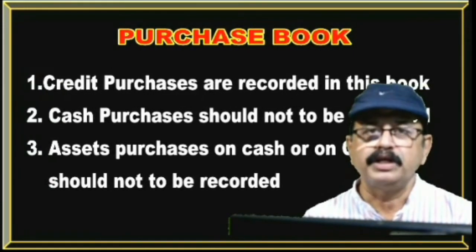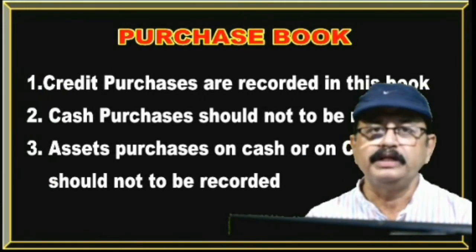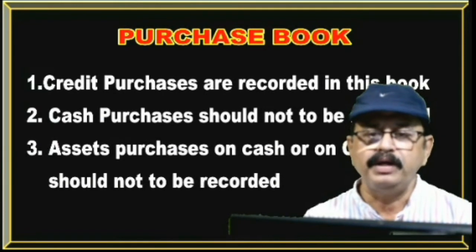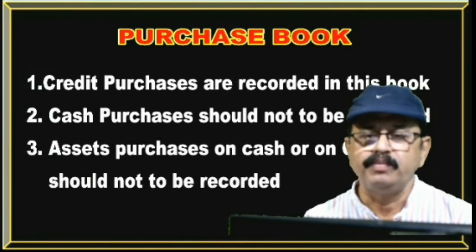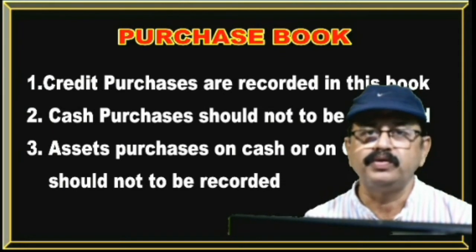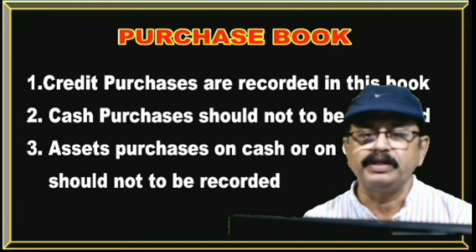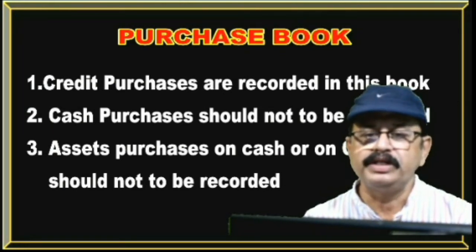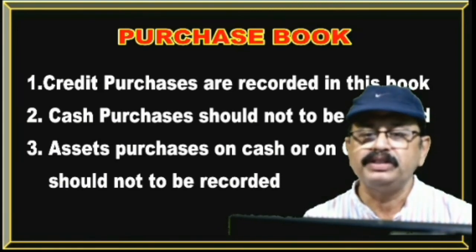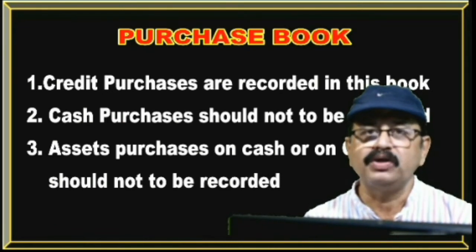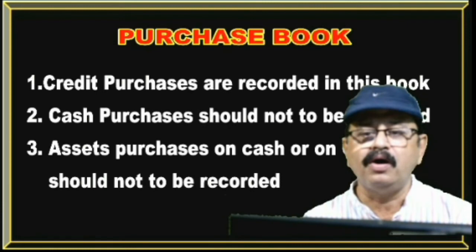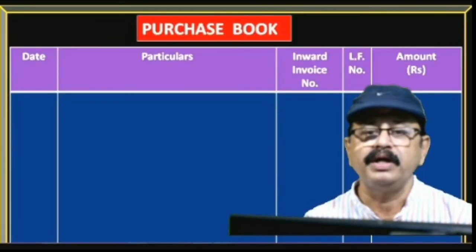In the subsidiary books, the first one is the purchase book. Before preparing the purchase book, we should know its rules. Rule one: only credit purchases are recorded in this book. Rule two: cash purchases should not be recorded. Rule three: asset purchases, whether on cash or on credit, should not be recorded.